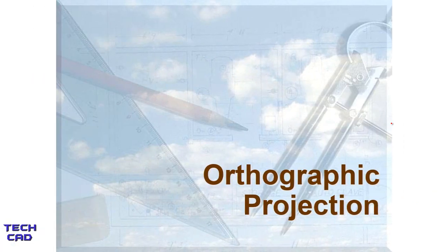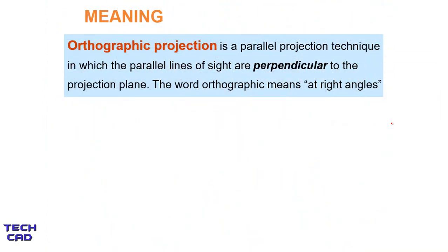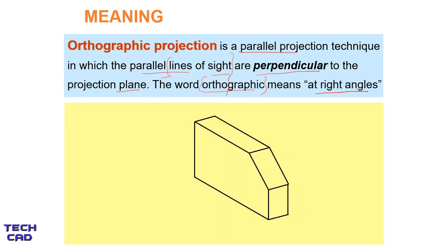Now we are going to understand in detail what is orthographic projection. Orthographic projection is the parallel projection technique in which parallel lines of sight are perpendicular to the projection plane. The word 'orthographic' — 'ortho' means 90 degrees — means the projection should be made at 90 degrees or right angles. In this example we will understand how it is at 90 degrees.